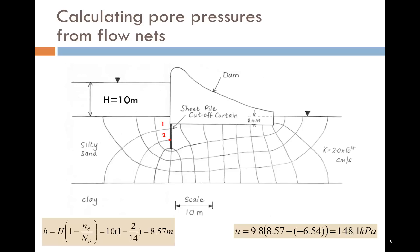An example of how this is implemented is shown in this slide. Choosing a point on the upstream side of the sheet pile marked by the red dot, the head has been lost over 2 of the 14 squares. So the total head is 10 meters times 1 minus 2 over 14, which is 8.57 meters. The elevation head is measured directly relative to our downstream datum, which is minus 6.54 meters. And therefore, our pore water pressure is calculated as shown in the bottom right-hand corner.